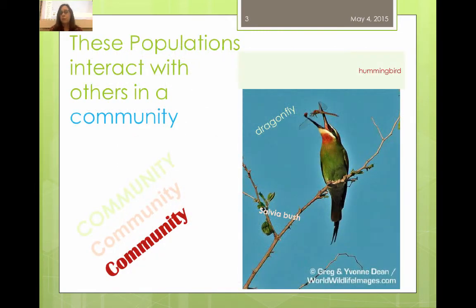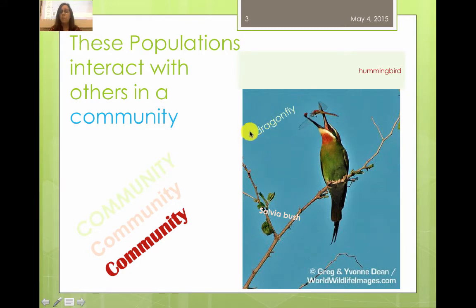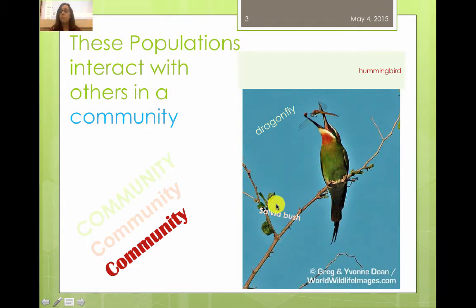The populations that are in a particular ecosystem — let's say the mill pond out in the loop of the Nashua River that we have right on our campus — those populations are going to interact with each other and form what we call a community. A community might include, for example in this image, the dragonfly population in a watery environment like our pond that interacts with a hummingbird population, salvia bush population, and many other populations of organisms — both plants, animals, and microorganisms that live in that particular community. So the community refers to the living things.